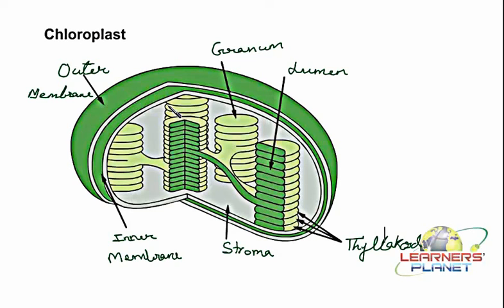Chloroplast is also known as the kitchen of the cell, because in plants it is responsible for synthesizing food material. The thylakoid contains the pigment chlorophyll and other pigments, and all these pigments together help in the process of photosynthesis. So while studying biology, if you go through a diagram, brief yourself on the properties, structure, and functions — the subject becomes very easy. Don't be scared of biology; it is a very interesting subject, and what you need is practice.